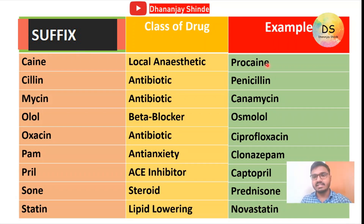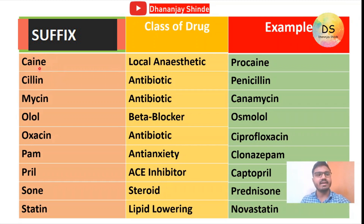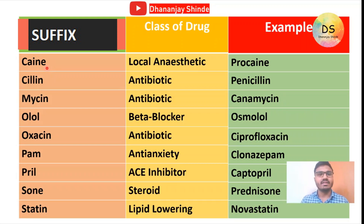For example, see this — I have mentioned procaine in the example table. So what will be the suffix for procaine? C-A-I-N-E — this will be the suffix for procaine. The first suffix in this table is '-caine'. If any drug's ending or suffix is '-caine', then the class of drug will be local anesthetic.